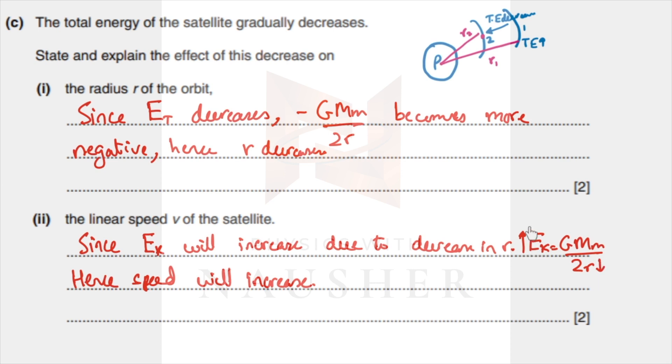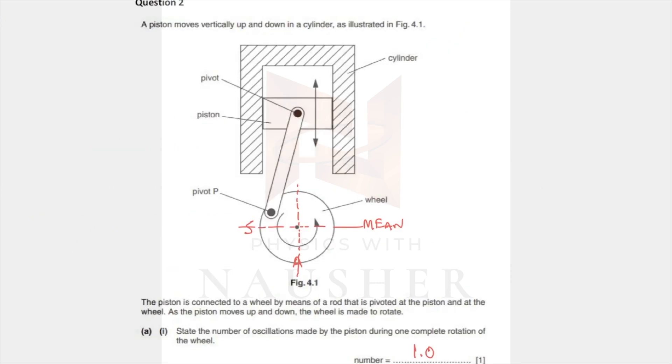Question number two: state the number of oscillations made by the piston in one complete rotation of the wheel. When the wheel rotates completely, the piston first goes down, then comes back up, goes further up, then comes back down to start the oscillation. So in one rotation of the wheel, your piston also completes one rotation.